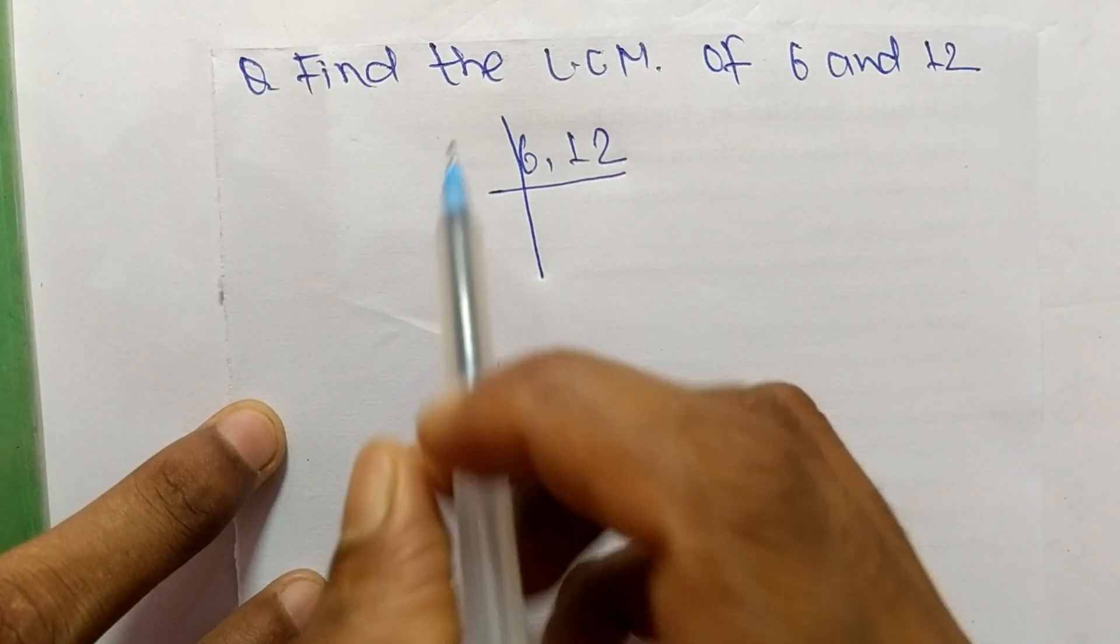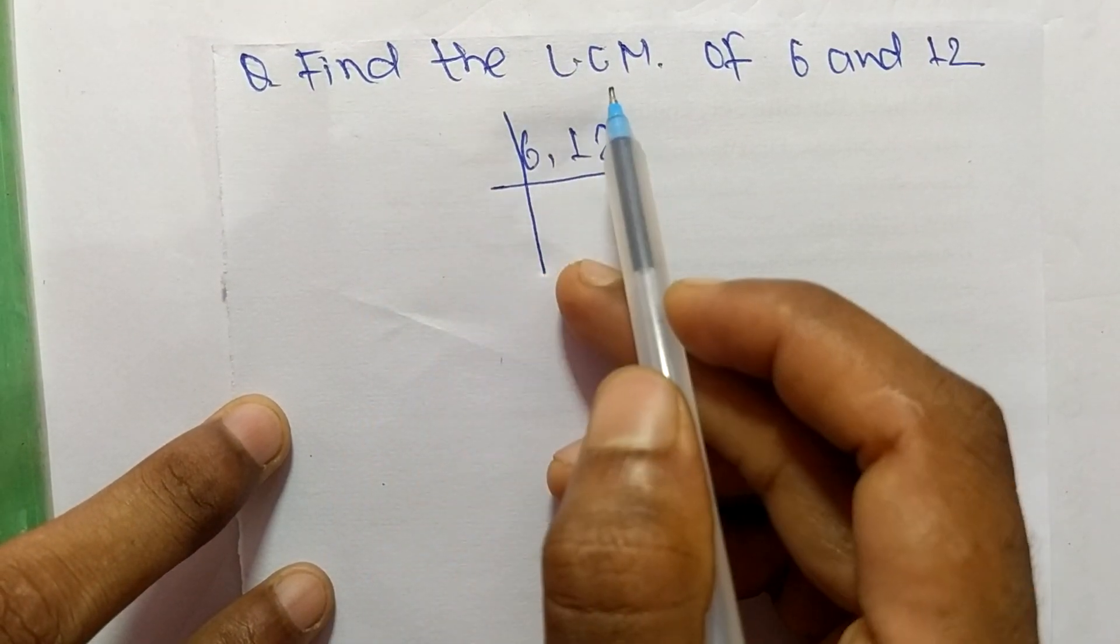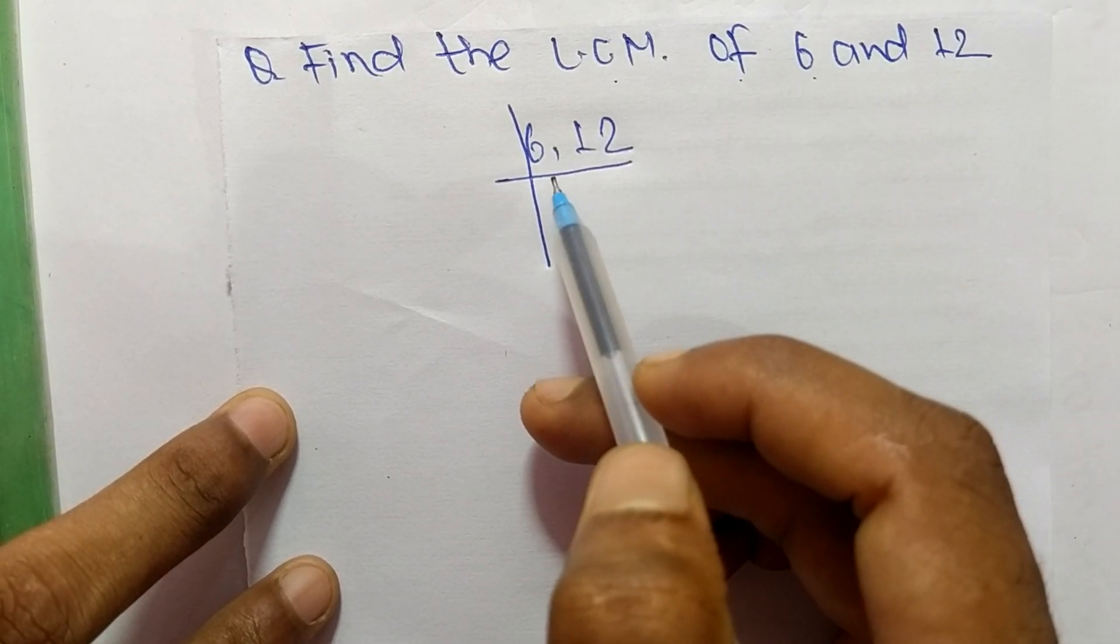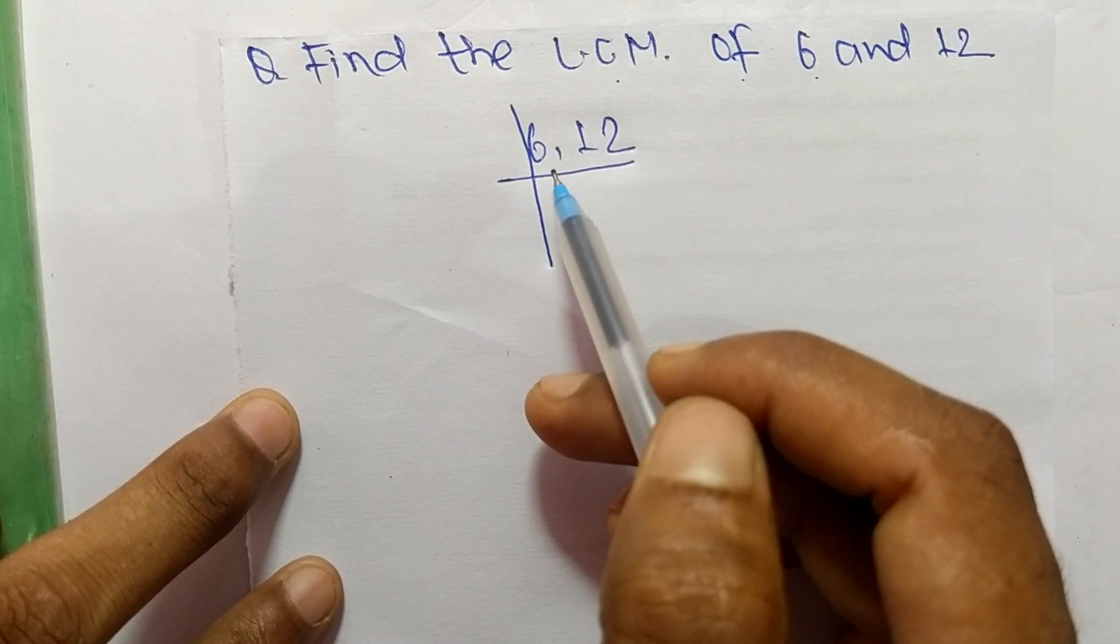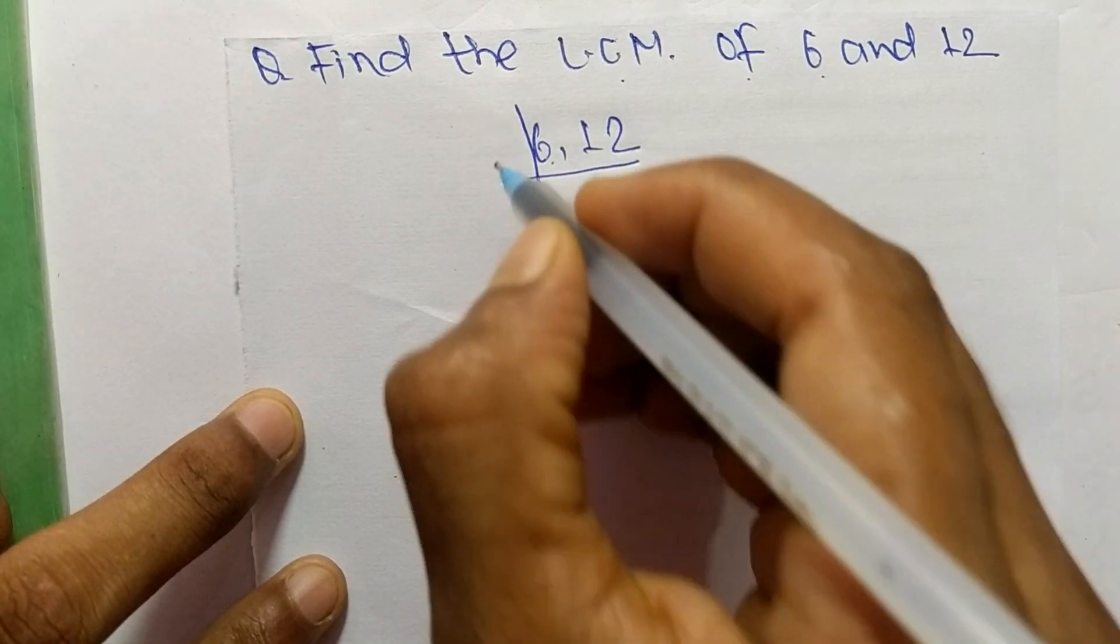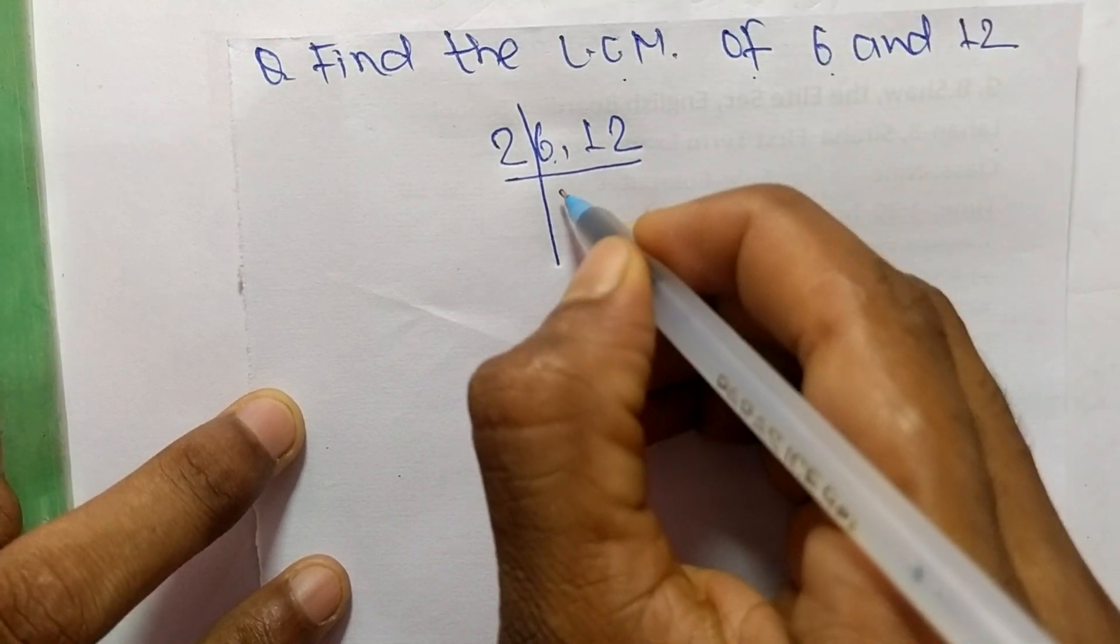So today in this video we shall learn to find the LCM of 6 and 12. To find LCM, we choose the lowest number which can exactly divide both numbers. So the lowest number is 2.